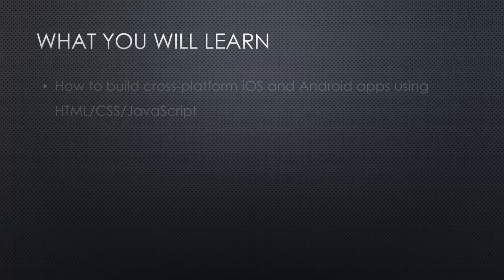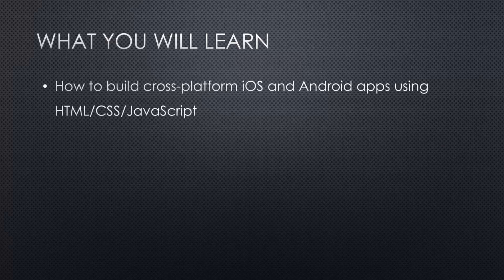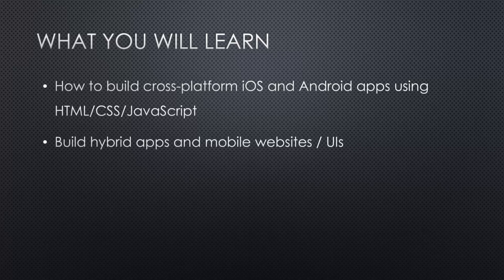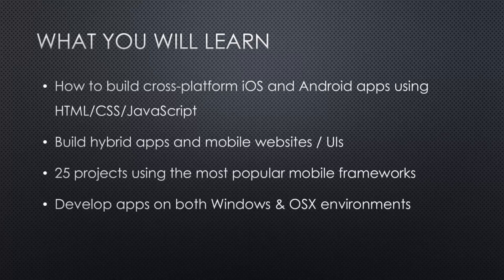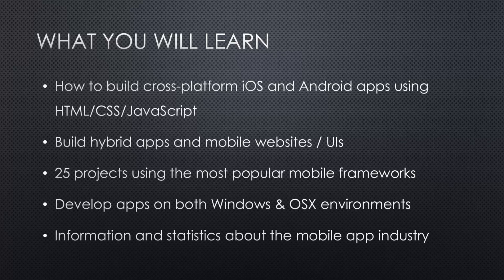So let's take a look at what you'll gain from this course. You'll learn how to build cross-platform iOS and Android apps using just HTML, CSS, and JavaScript — no Swift or Java complicated programming. You'll also learn how to build hybrid and web applications that can run in a browser as well as a native container. We'll have 25 projects using the technologies and frameworks covered, and we'll be using multiple dev environments, including Windows 10 and Mac OSX. We'll also look at slides, information, and statistics about the mobile app industry.